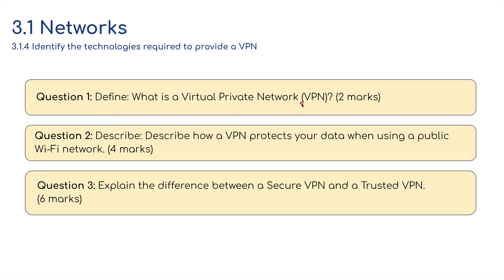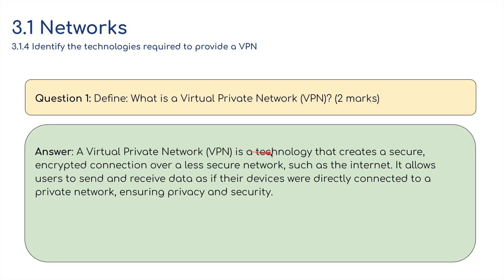There are three exam questions. Question one — define (2 marks): What is a virtual private network? Answer: A VPN is a technology that creates a secure, encrypted connection over a less secure network such as the internet. It allows users to send and receive data as if their devices were directly connected to a private network, ensuring privacy and security.